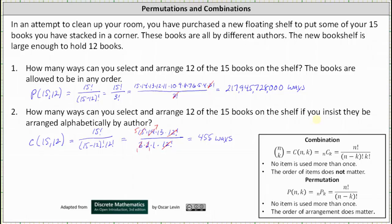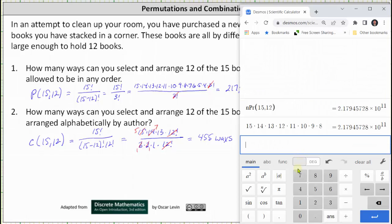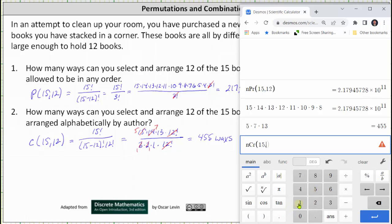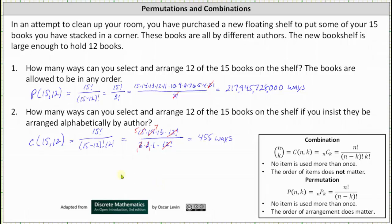And let's go ahead and verify this on the calculator. So let's first enter 5 times 7 times 13, and let's make sure we get the same result for 15 choose 12. Which we do. I hope you found this helpful.